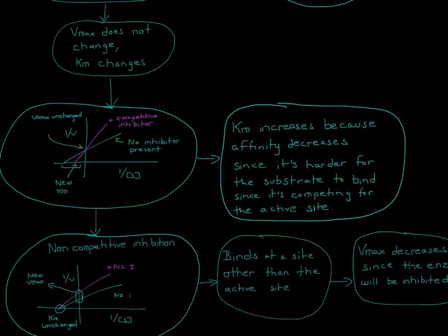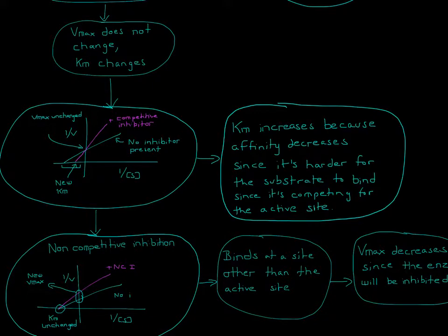KM increases because the affinity decreases, since it's harder for the substrate to bind as it's competing for the same active site.